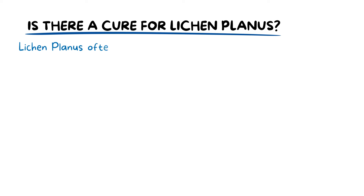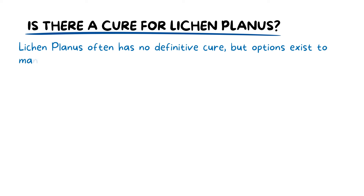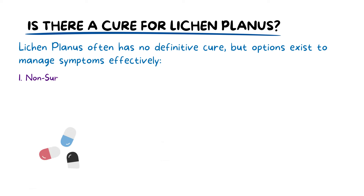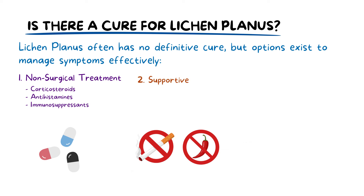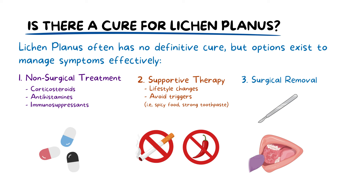Lichen planus is often a chronic condition without a definitive cure; however, many treatment options aim to manage symptoms effectively. Non-surgical treatment is often the first line of defense and includes medications like corticosteroids, antihistamines, and sometimes immunosuppressants. Lifestyle changes such as avoiding triggers like spicy foods or irritants can also be beneficial. While rare, a surgical approach may be considered in severe cases that are resistant to medications.